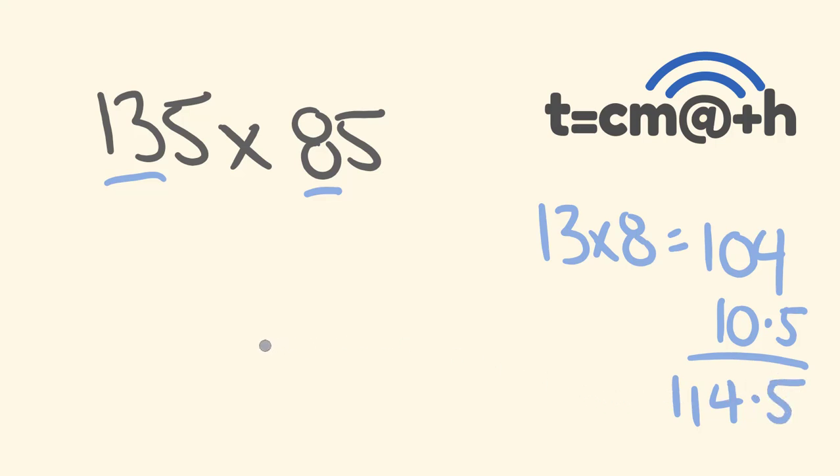Alright, so what do we do now? Multiply this by 100. 114.5. Alright, and we're going to add 25 to it. Alright, 50 plus 25 is going to be 75. 11,475.